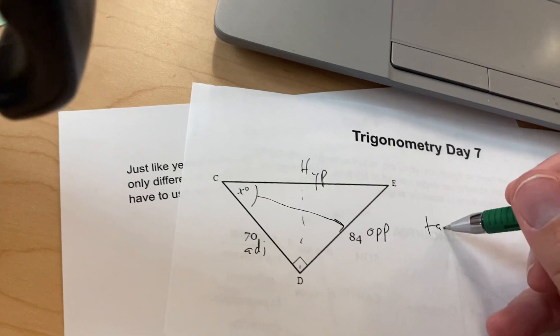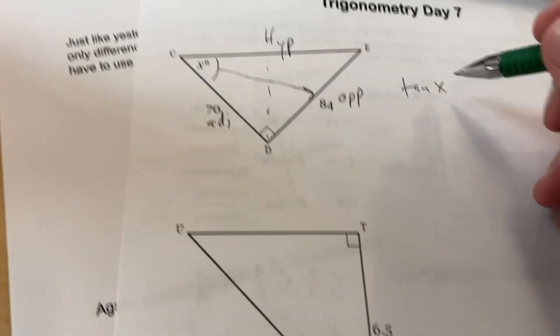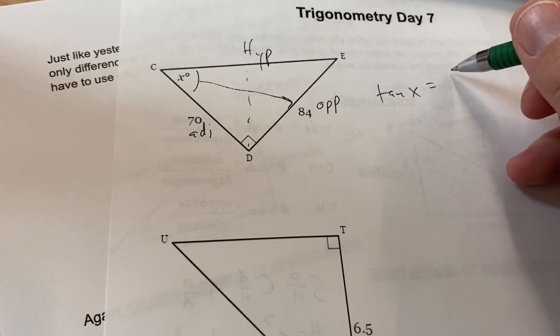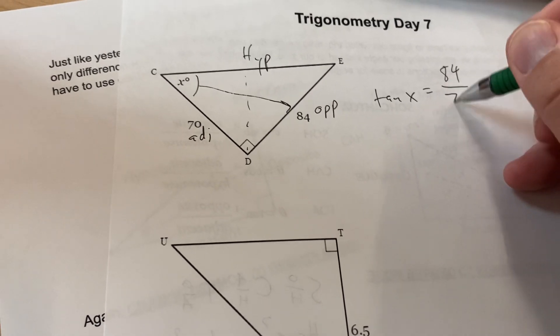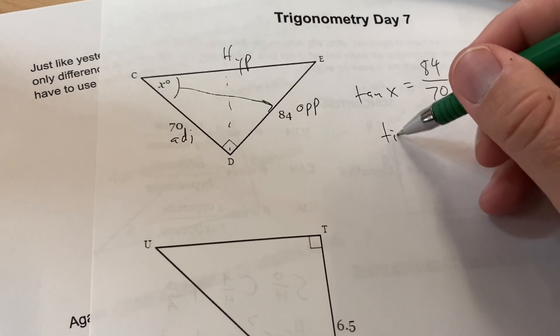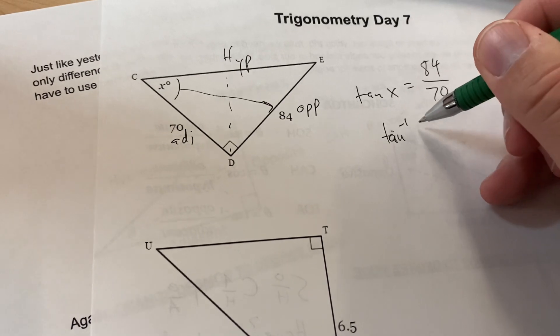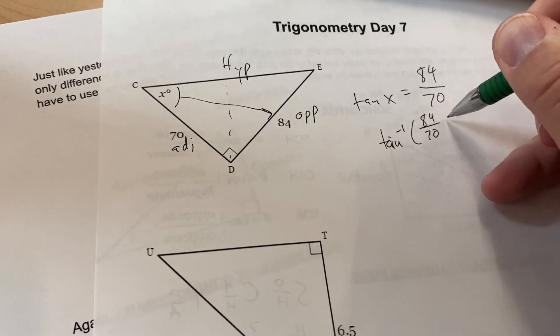So the tangent of this X, the one that we're missing, is equal to the opposite of 84 over the adjacent of 70. And I would do the inverse tangent of 84 over 70.